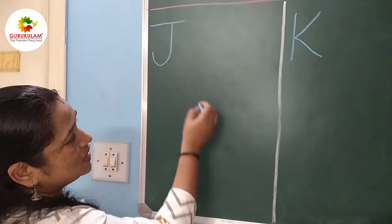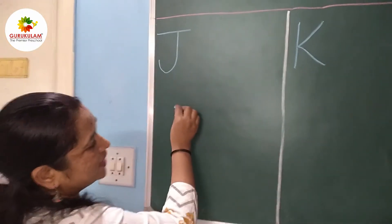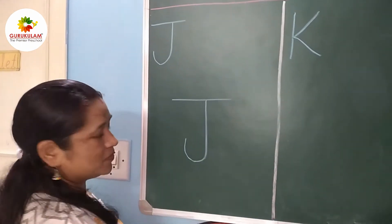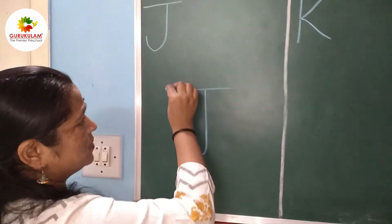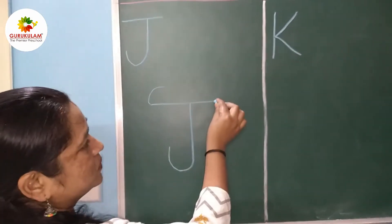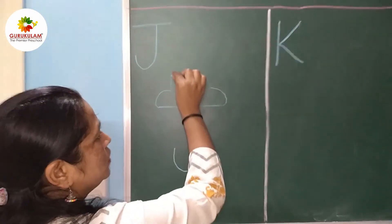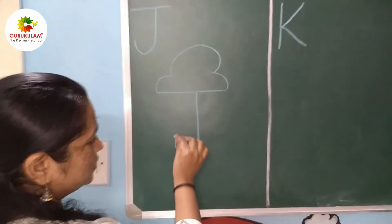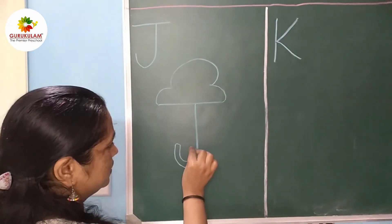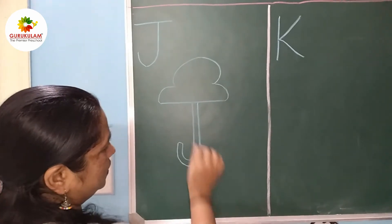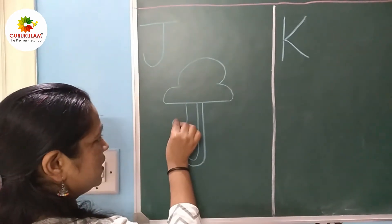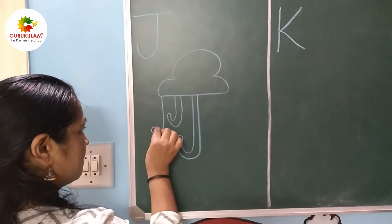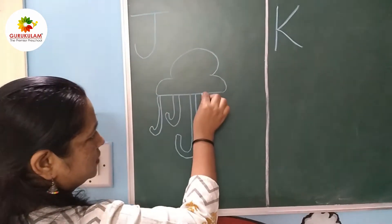Let's see what we can draw with the help of J letter. This is our capital G and our curve. Up, and get up, here also.